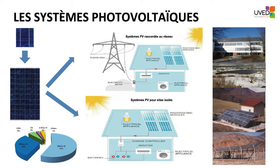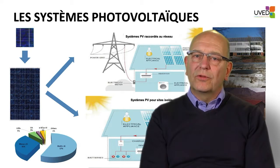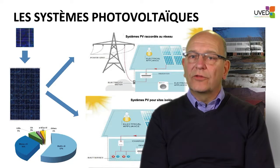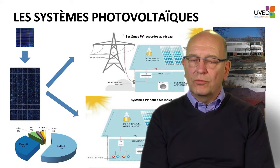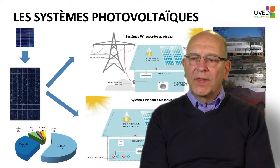There are also systems whose objective is to feed isolated sites, with the help of a battery to adapt supply to demand. Depending on the type of charge, they might use a converter. Examples include a country house in a very isolated place or a professional system for cathodic protection.